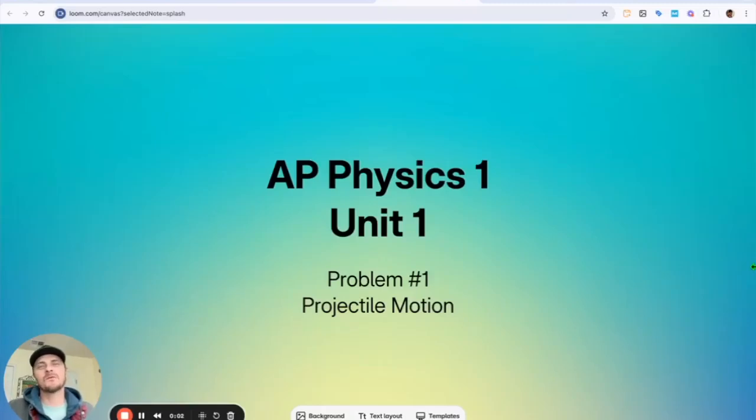Hey, Mr. Heinrich here, and you're about to watch one of my AP Physics 1 progress checks. This one is Unit 1, Problem 1. It's on projectile motion. Check it out.